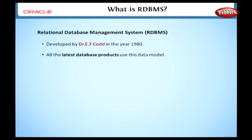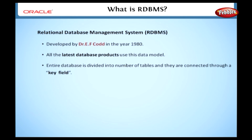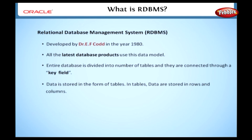Let's discuss how data is stored in a Relational Database Management System. Take a look at this picture — it gives you a clear idea about RDBMS. In a Relational Database Management System, an entire database is divided into a number of tables, and they are connected through a key field. Data is stored in the form of tables, with rows and columns.